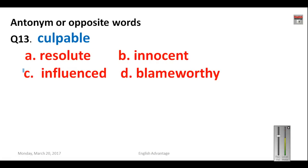Question number thirteen: 'culpable.' Culpable means a person who can be blamed. The options are: resolute, influenced, blameworthy, and innocent. Since you have to find the antonym, innocent will be the correct answer.